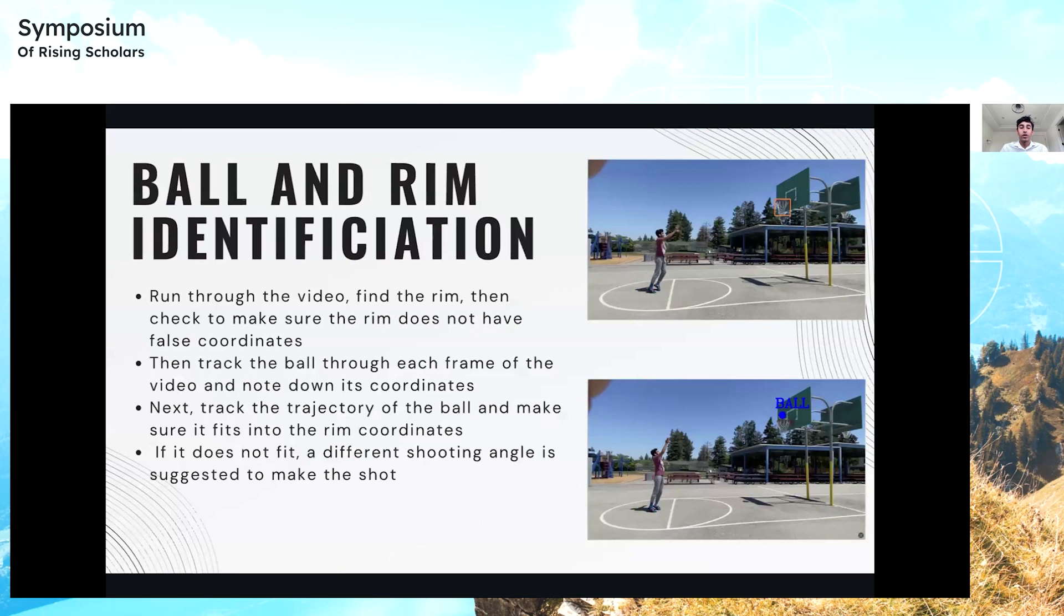The first step was ball and rim identification. I ran through the video and found the rim's coordinates using the TensorFlow library. Then I tracked the ball's coordinates through each frame and noted them down. I tracked the trajectory of the ball to make sure it fit into the rim's coordinates. If the ball's coordinates did not fit into the rim's coordinates, it was counted as a miss and a different shooting angle was suggested.